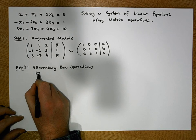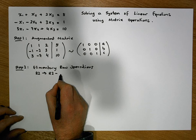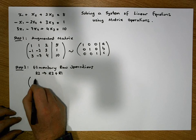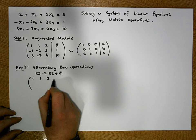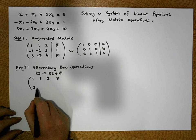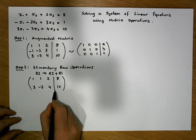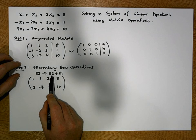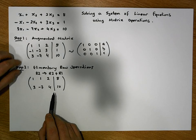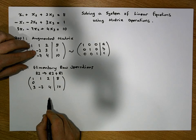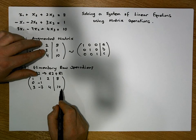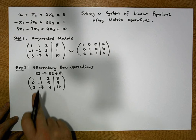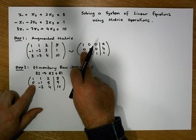So row 2 becomes row 2 plus row 1. Row 1 remains: 1, 1, 2, 8. Row 3 remains: 3, -7, 4, 10. Row 2 is updated: -1+1=0, -2+1=-1, 3+2=5, 1+8=9. So row 2 becomes 0, -1, 5, 9. We now have a leading 1 in row 1 and a leading zero in row 2.